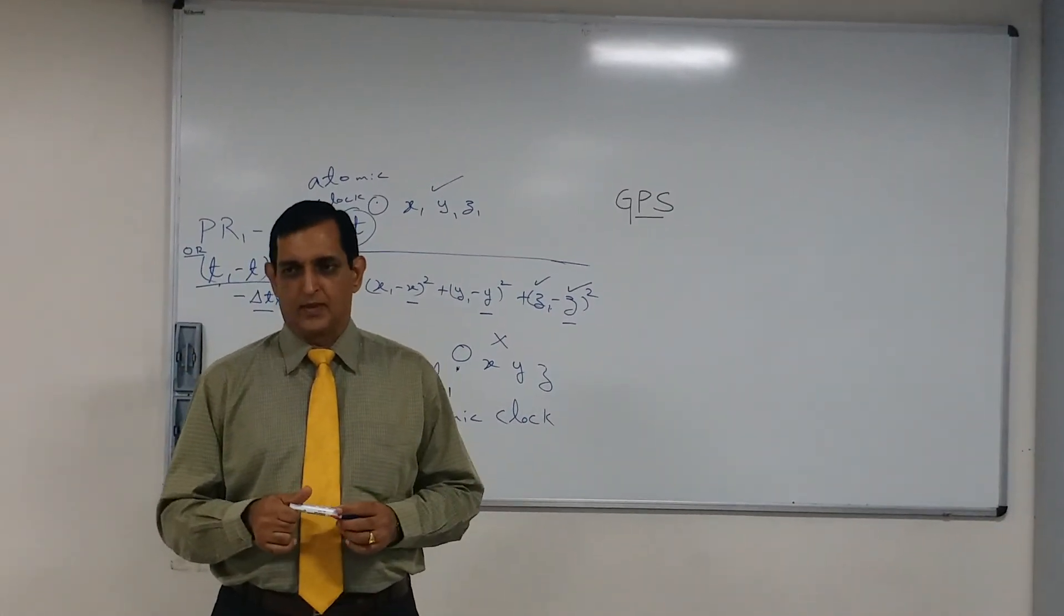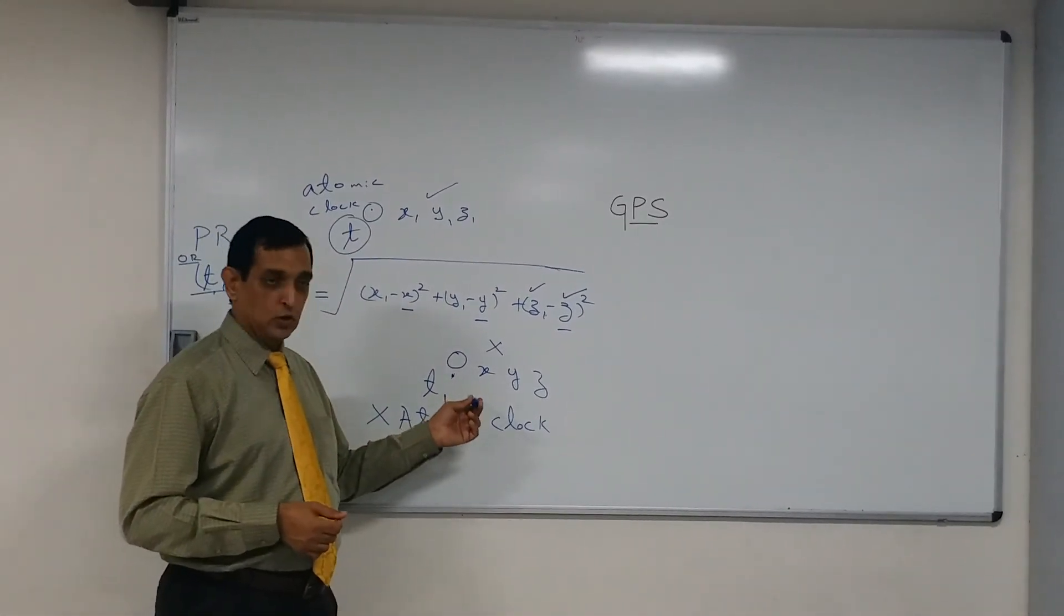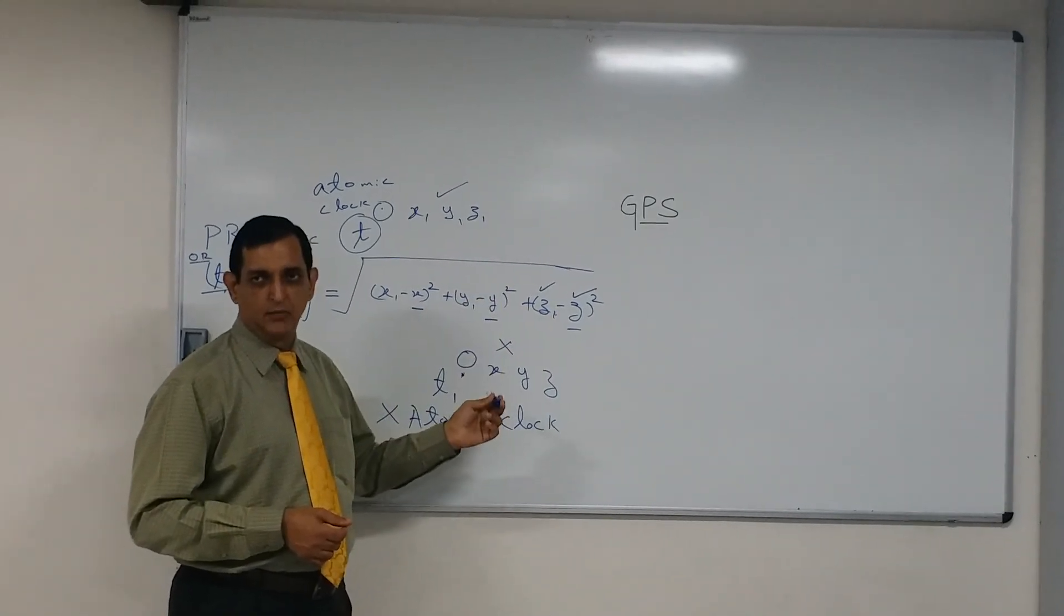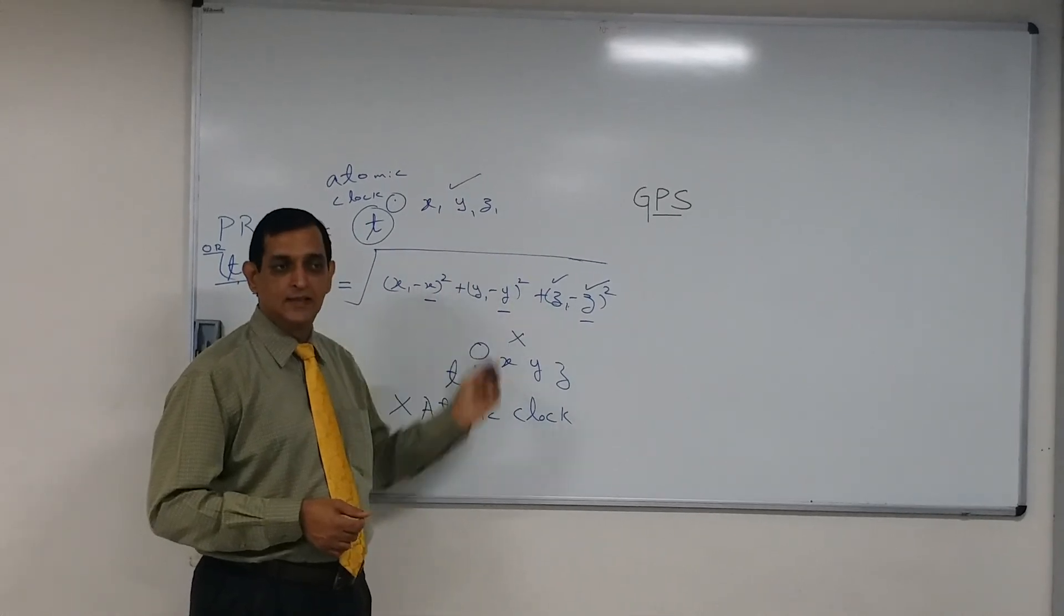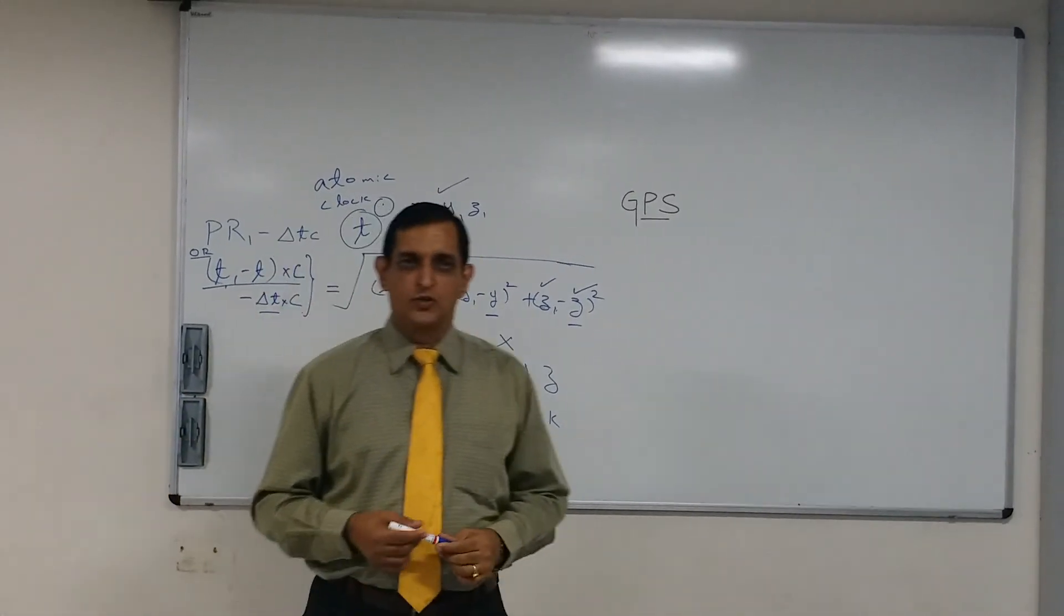Second one is the user's clock error. User's clock error is very simple as I told you, your clock and the satellite clock is a mismatch because you are not using an atomic clock. Satellite is using an atomic clock, so this is bound to be a mismatch. That is user's clock error.